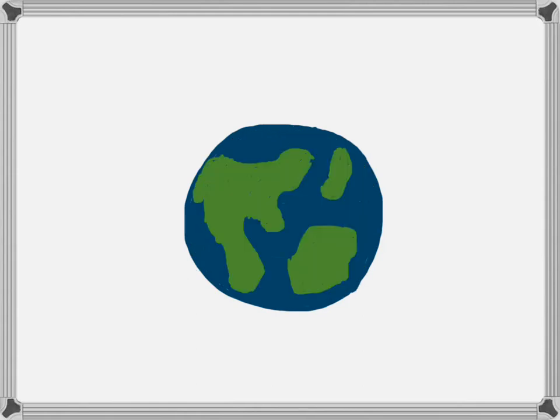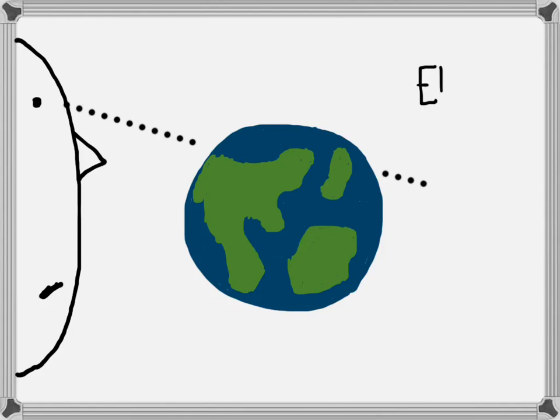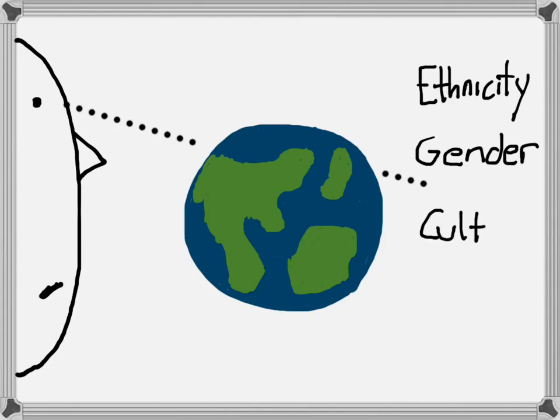They are the large scale ideas and major discourses that inform how we see the world. Just for example, we have things like ethnicity, gender, culture, religion. These are all complex ascriptions.